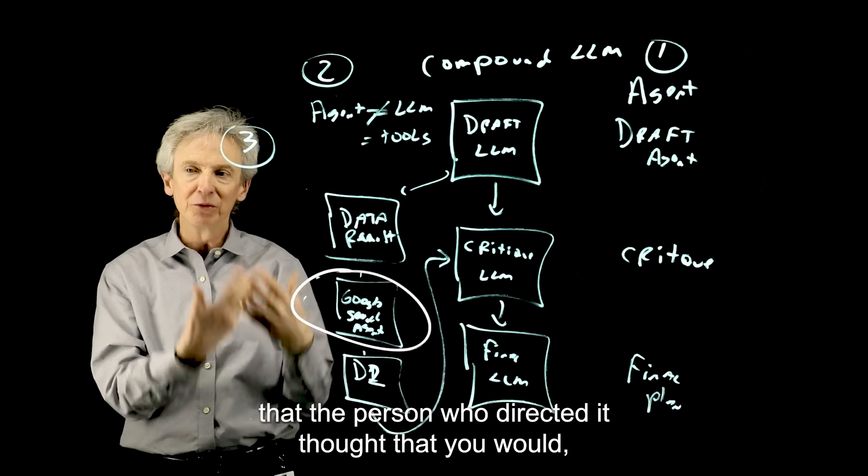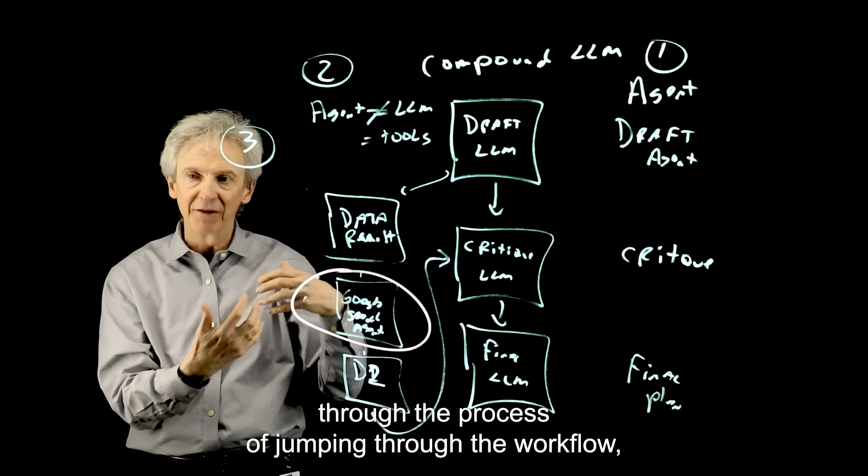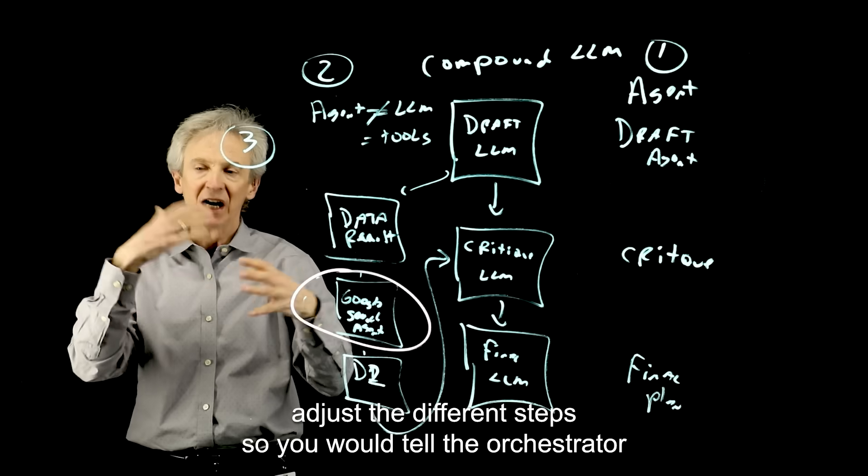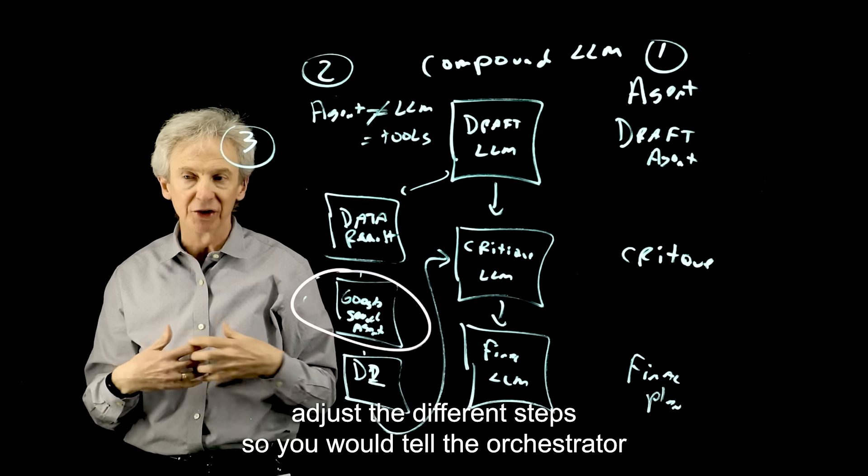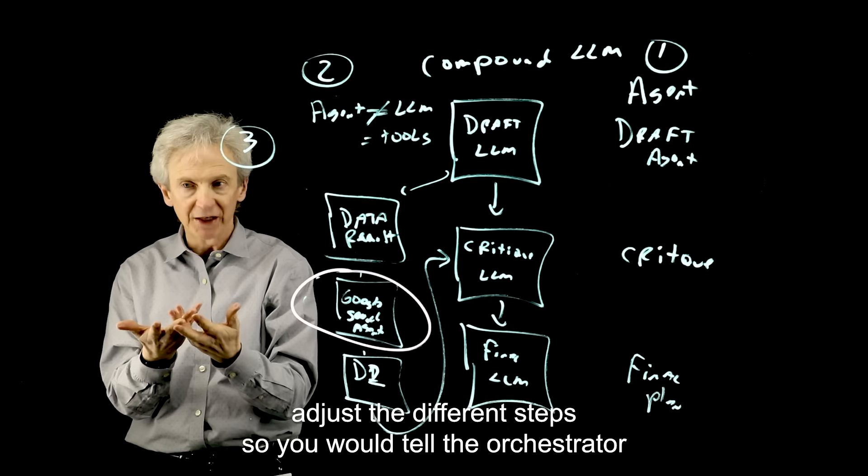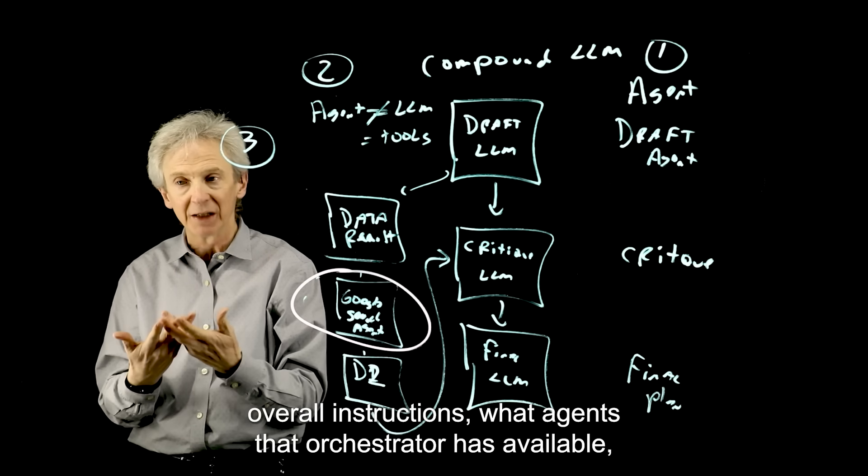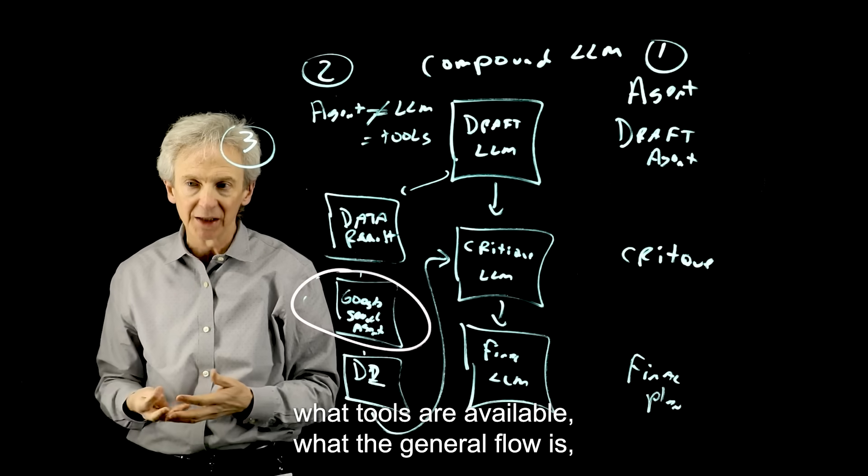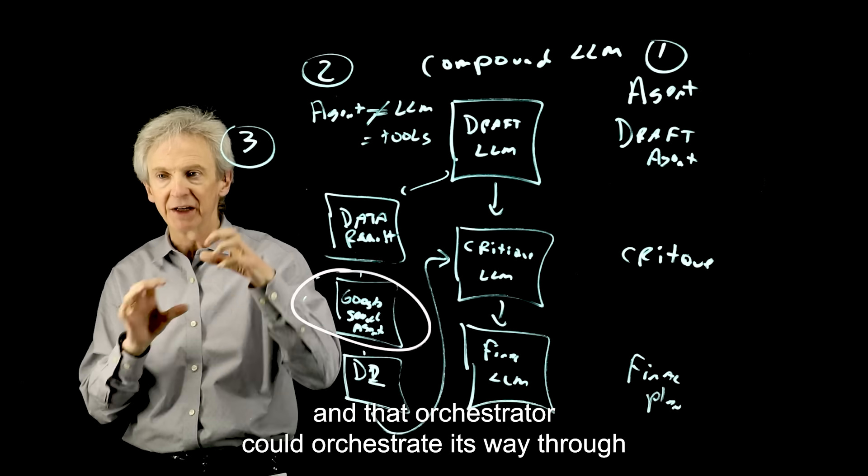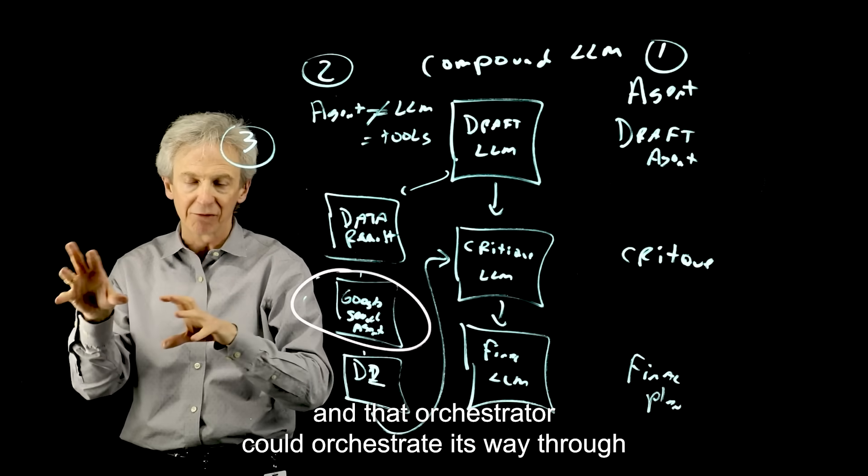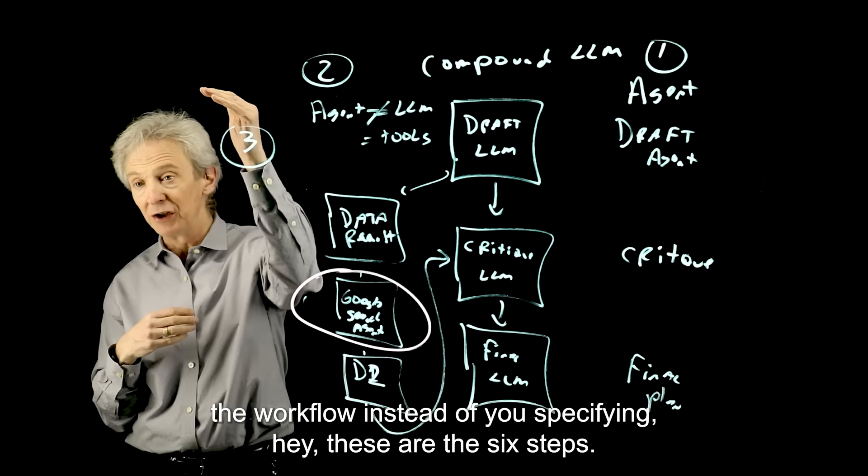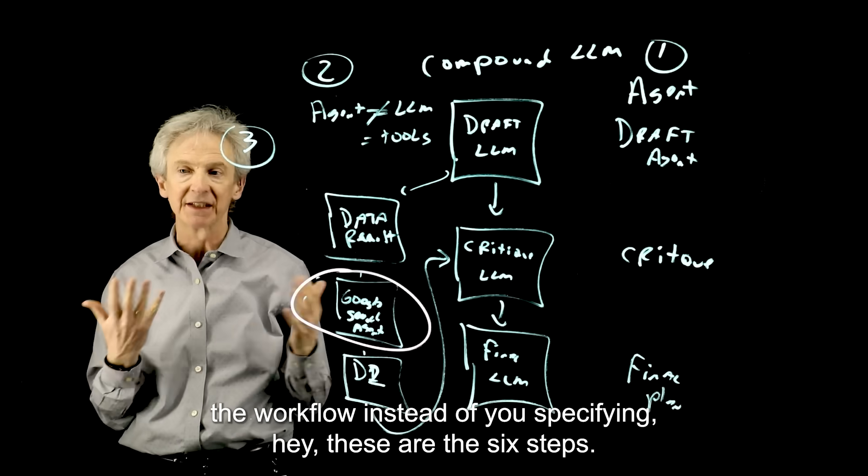Instead of having like a TV show that just comes at you in the order that the person who directed it thought, that you would, through the process of jumping through the workflow, adjust the different steps. So you would tell the orchestrator overall instructions, what agents that orchestrator has available, what tools are available, what the general flow is, and that orchestrator could orchestrate its way through the workflow instead of you specifying, hey, these are the six steps.